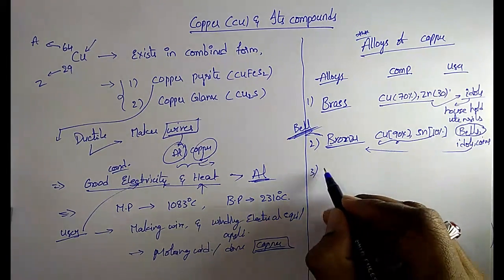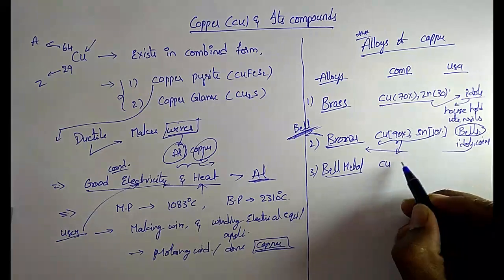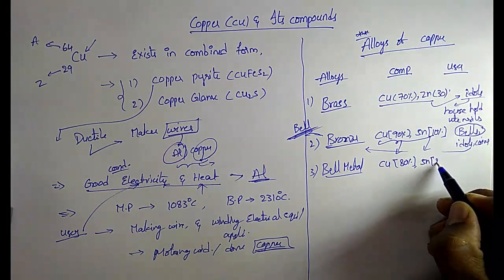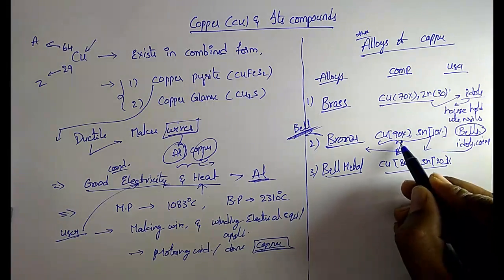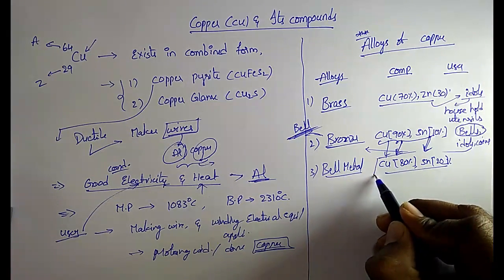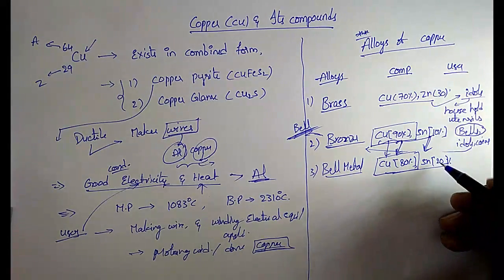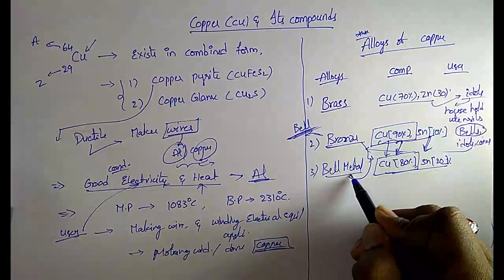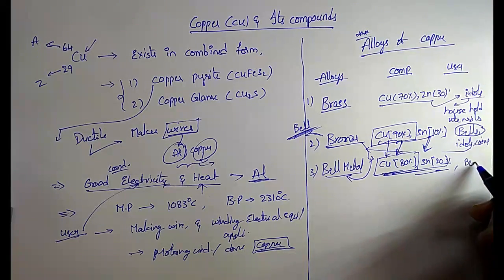Nowadays bells are made by bell metal. In bell metal, copper is reduced to 80% and tin is increased to 20%. This change is made to be more economical, since copper is a costly material, and also to produce a higher sound. Bell metal is used for the same purposes: bells, idols, and coins.